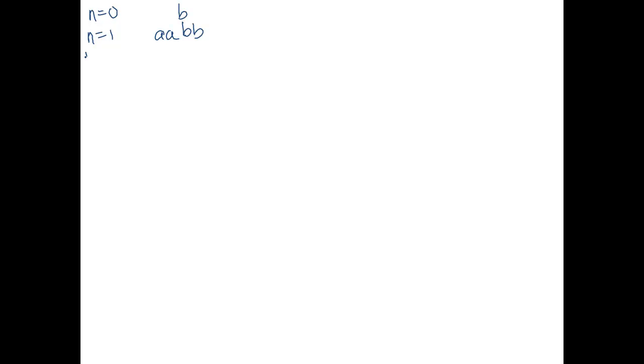We have 2n a's followed by n+1 b's. So if n is 0, I just have a single b — that's zero a's and zero plus one b's. If n is 1, I have two a's and then two b's: aabb. And if n is 2, I have four a's and then three b's. If n is 3, I would have six a's and then four b's.